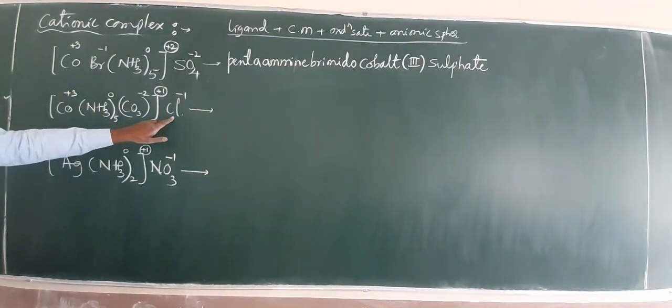You will buy. Cl is minus 1. Find out that cobalt is plus 3. The availability is heteroleptic.